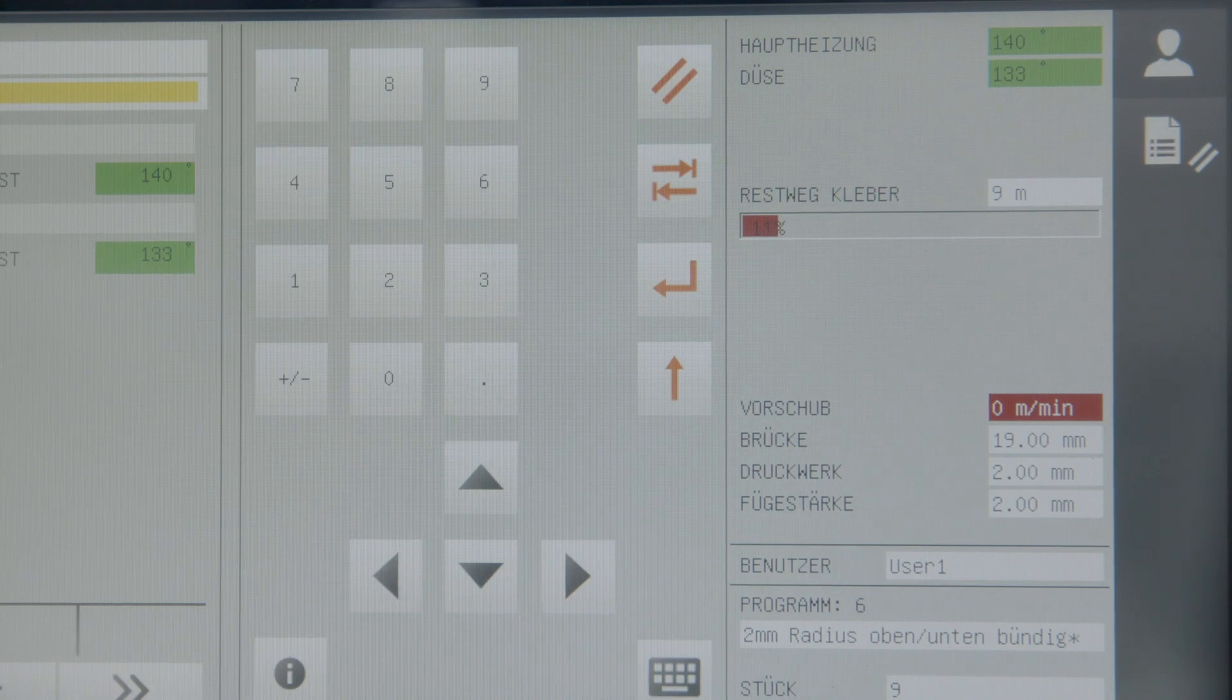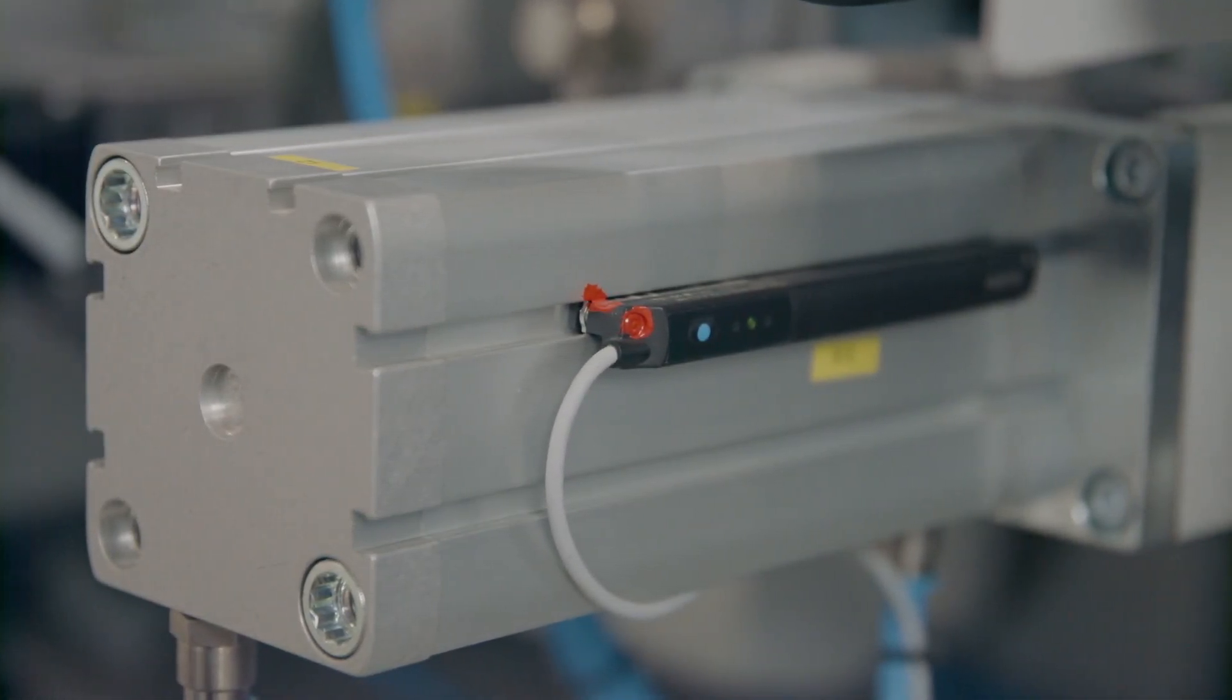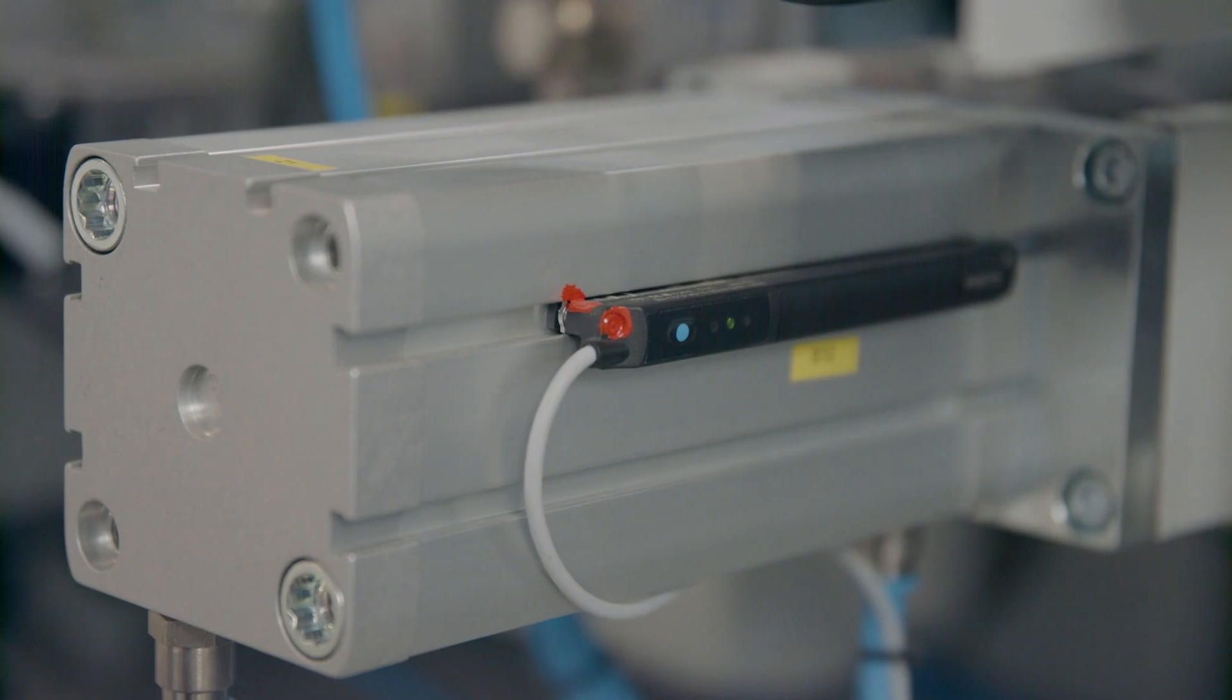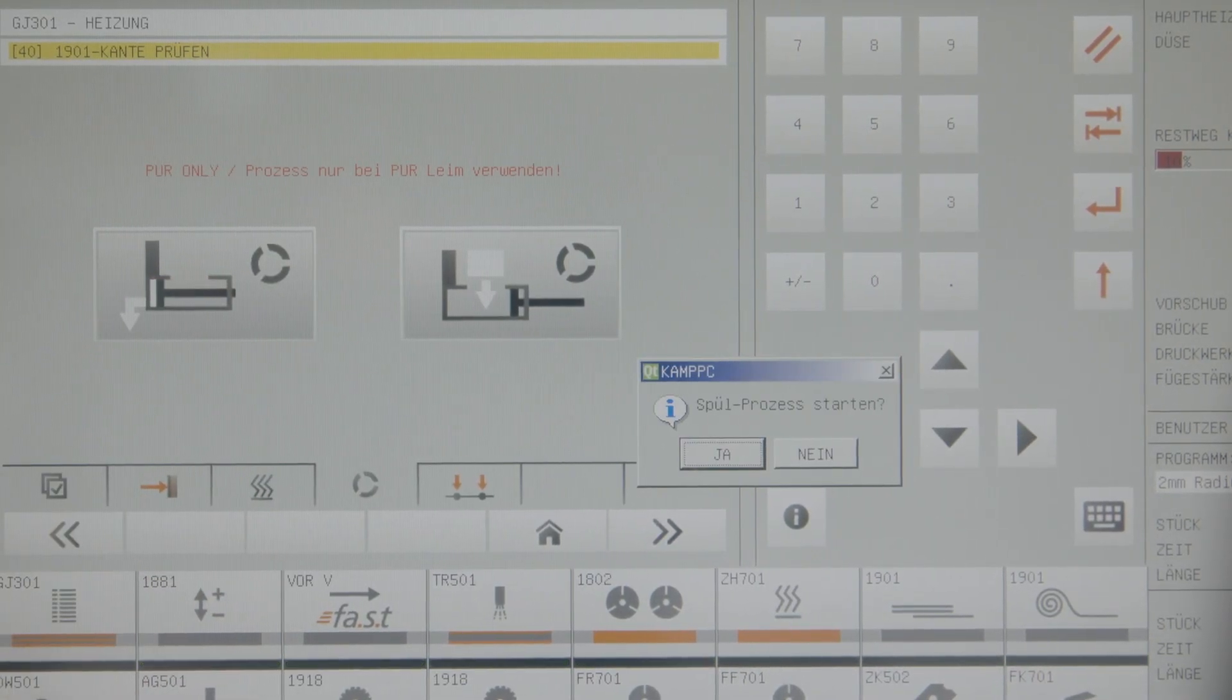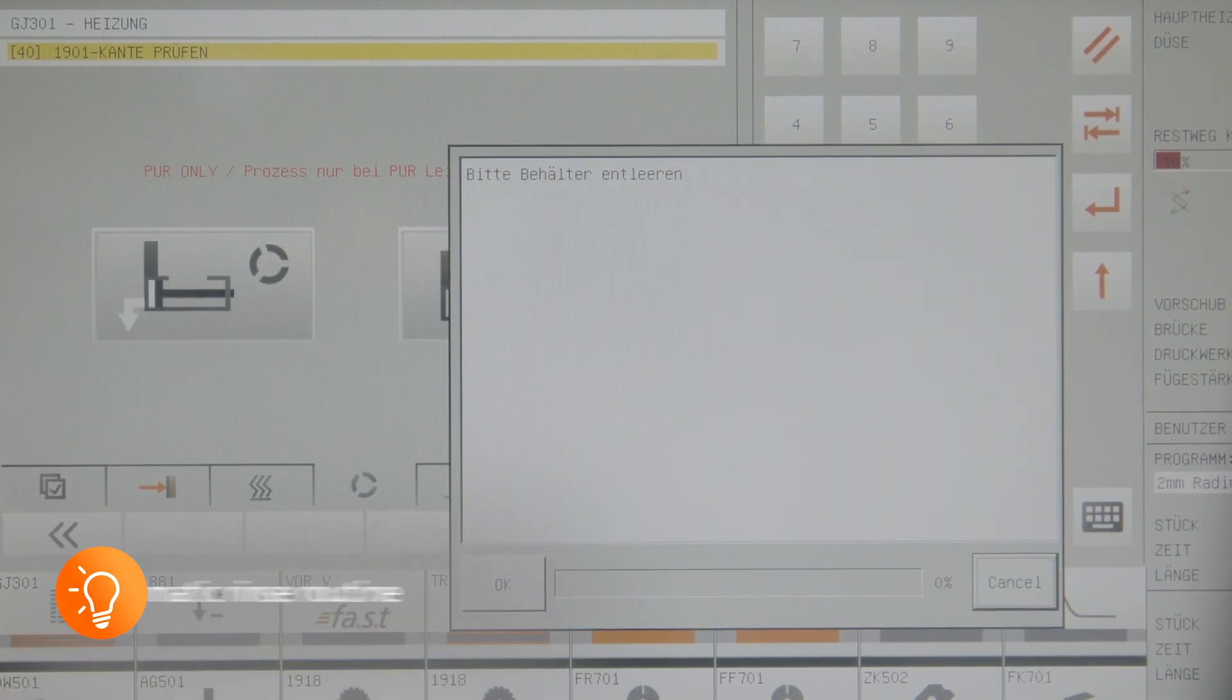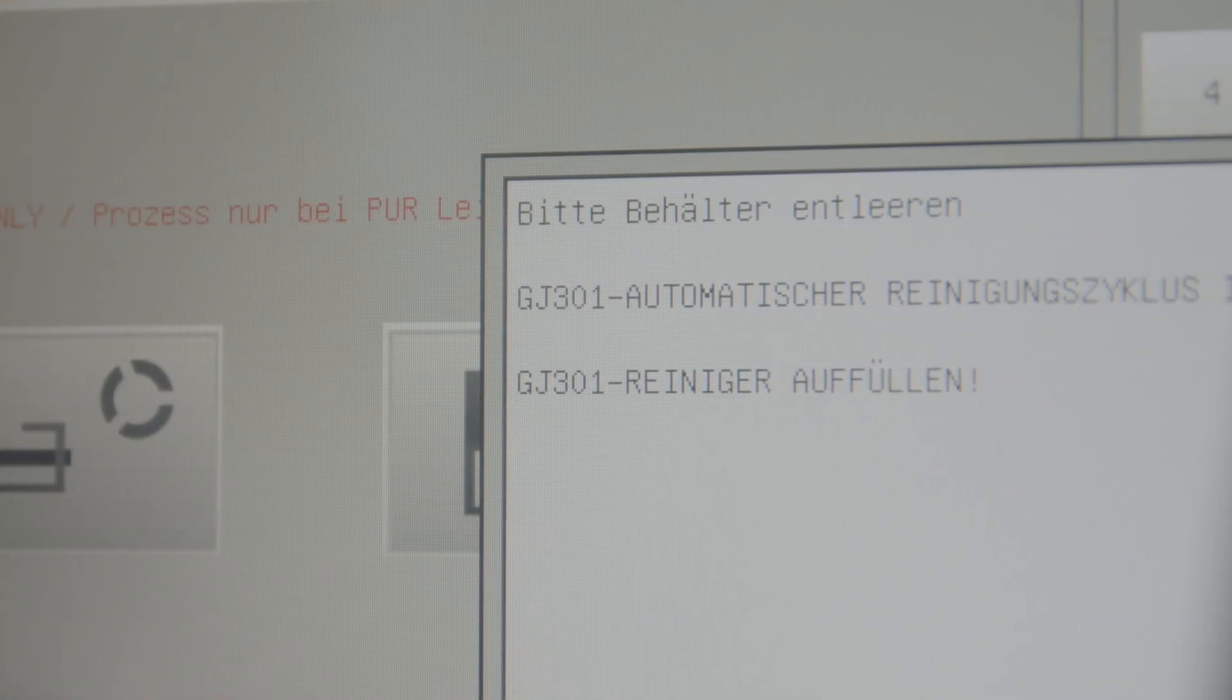Residual amounts of PUR can be used in a controlled manner before the start of the rinsing cycle and do not have to be rinsed out. Cleaning the system is child's play via a flushing routine that is completely guided by the control unit. As a result, PUR glue can remain in the glue station for up to 48 hours.